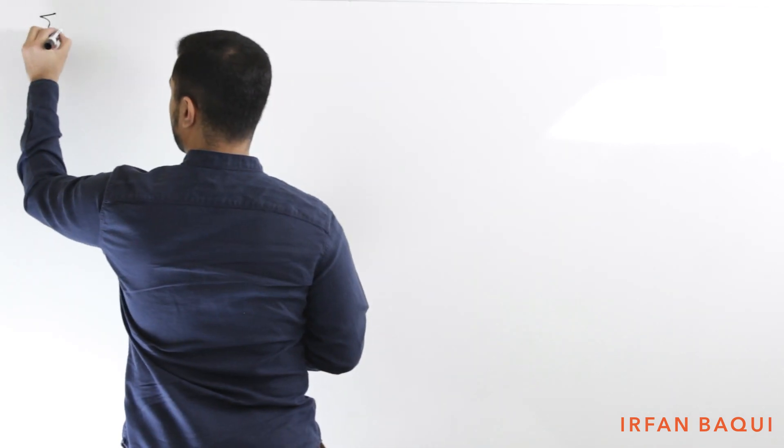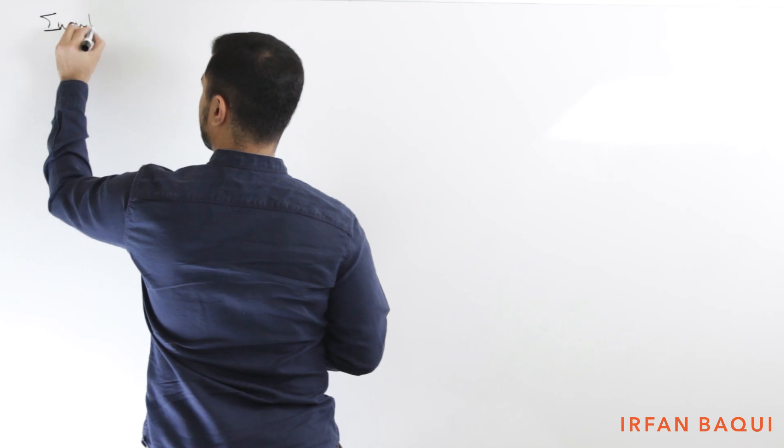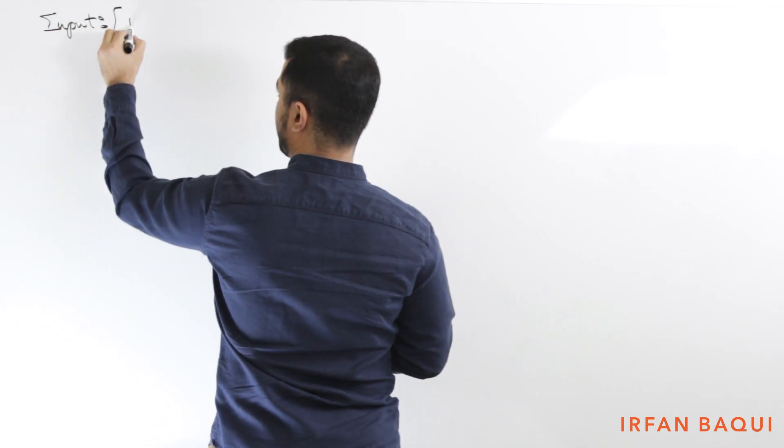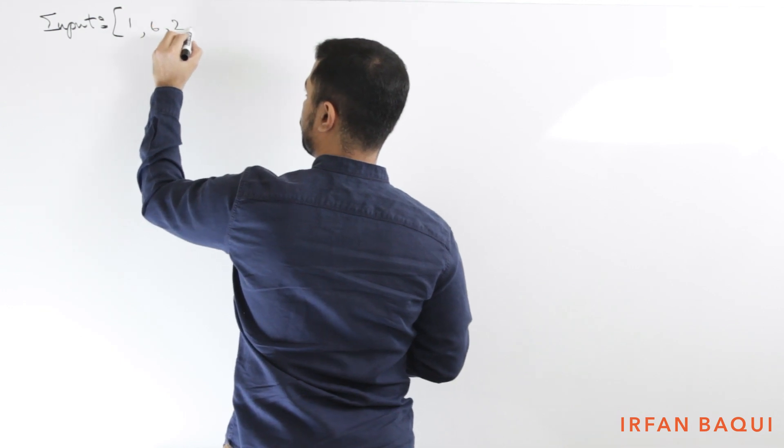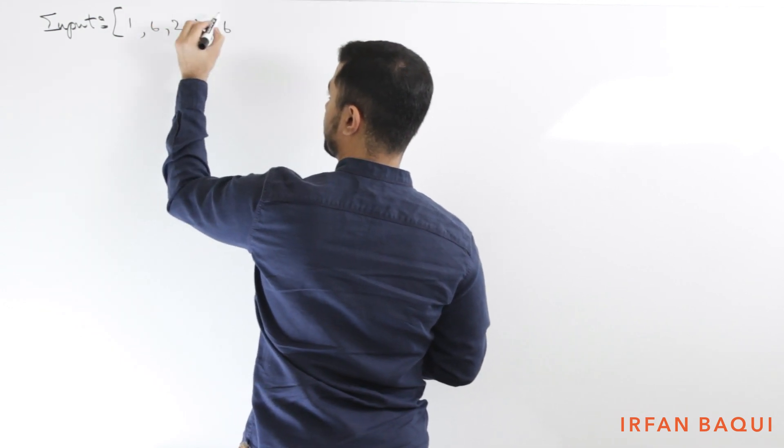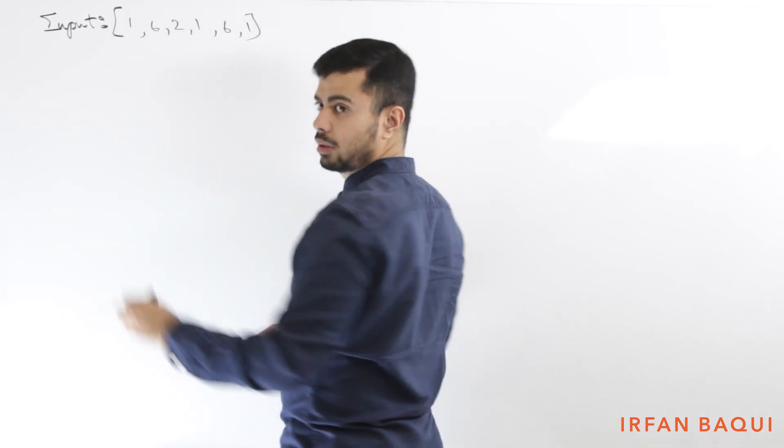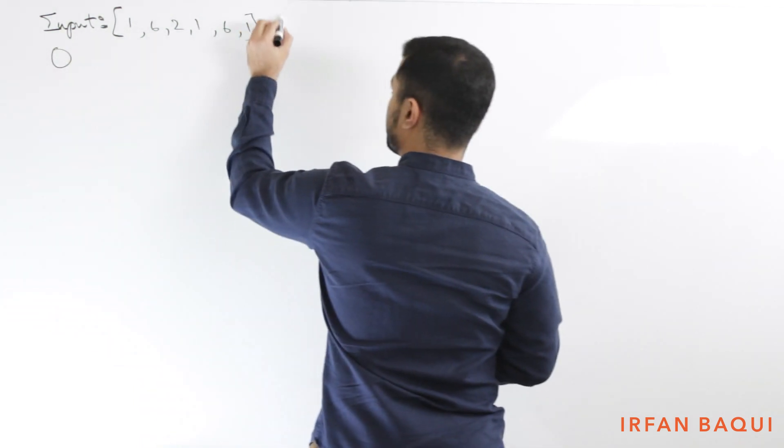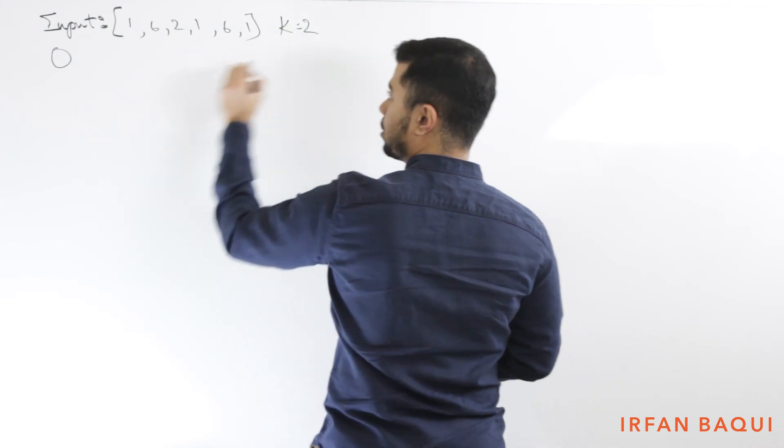So for this problem, I think it will be easier if you start out with an example. And this week's problem is that if you're given an array, how do you find the k most frequently occurring elements in it?